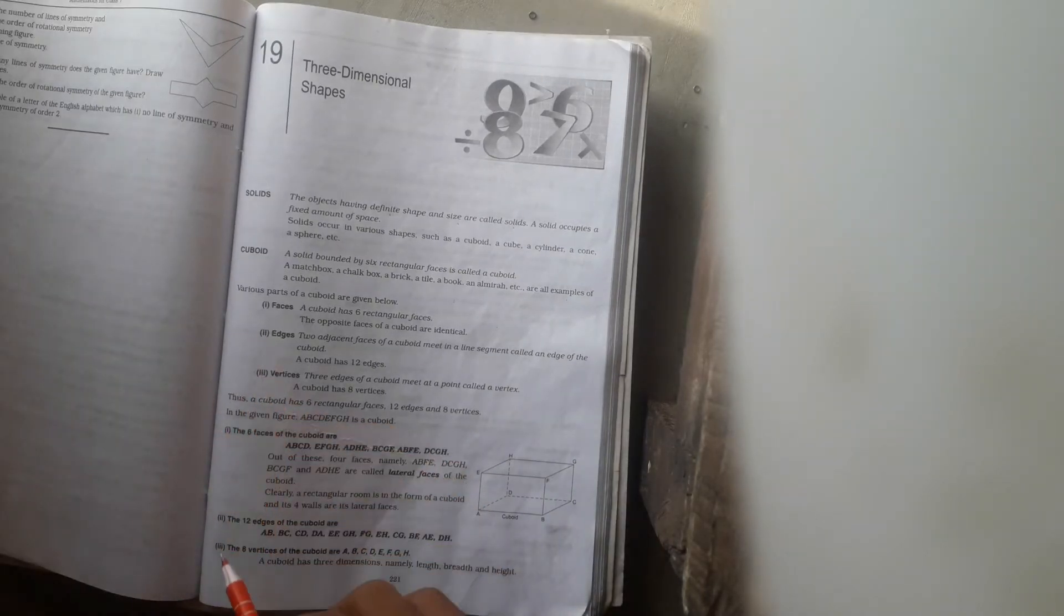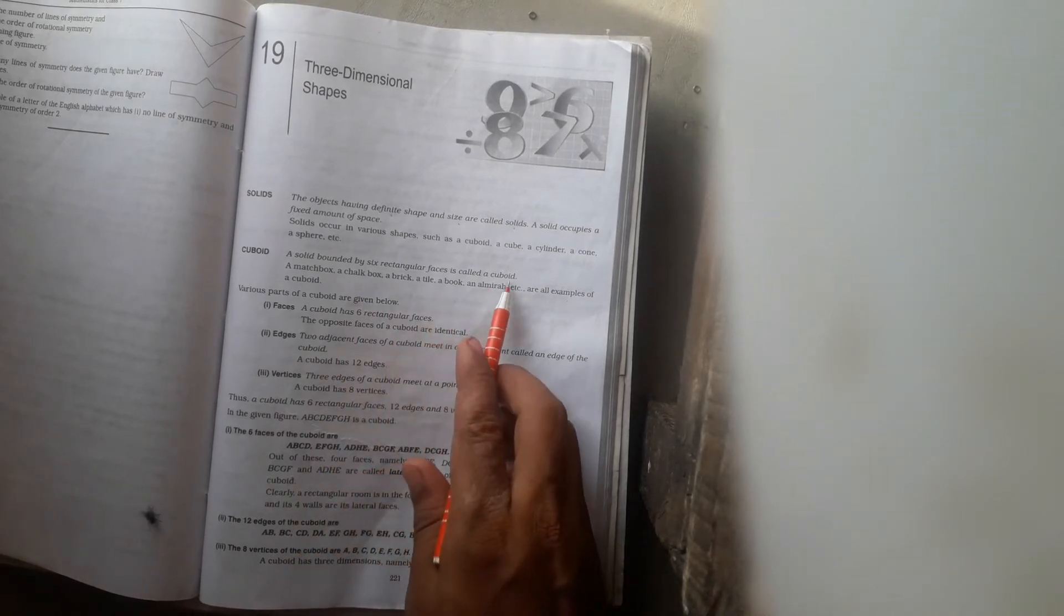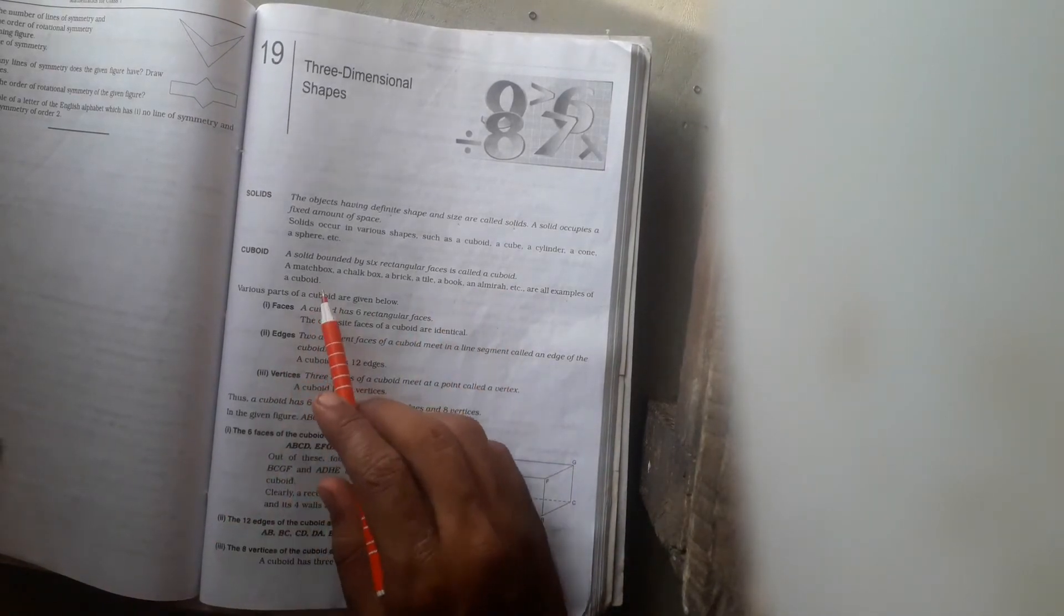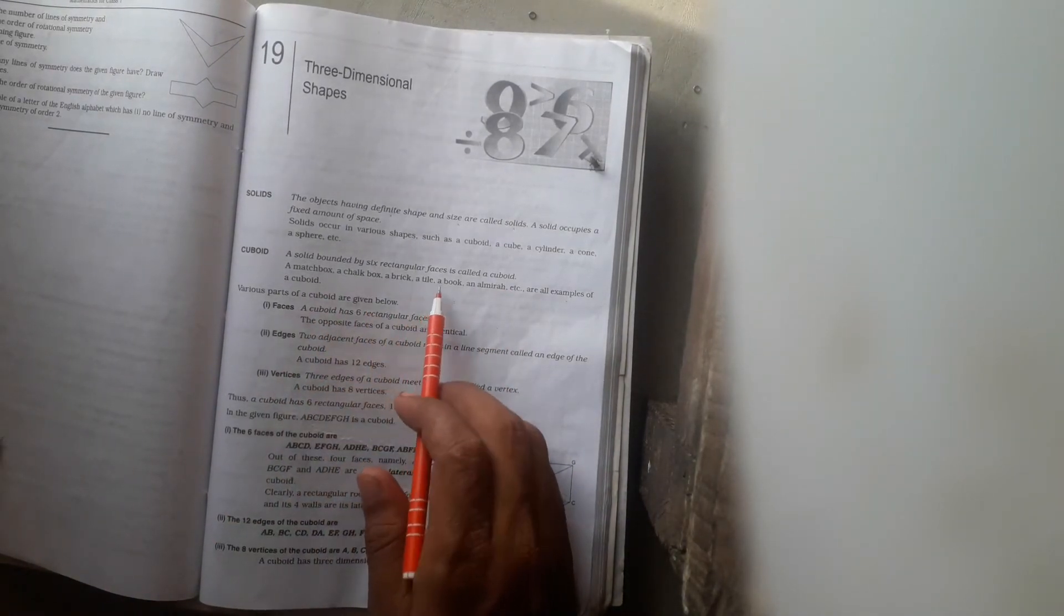What is a cuboid? A solid bounded by six rectangular faces is called a cuboid. Just like examples: matchbox, chalk, brick, tile, a book. There are many examples of cuboids.